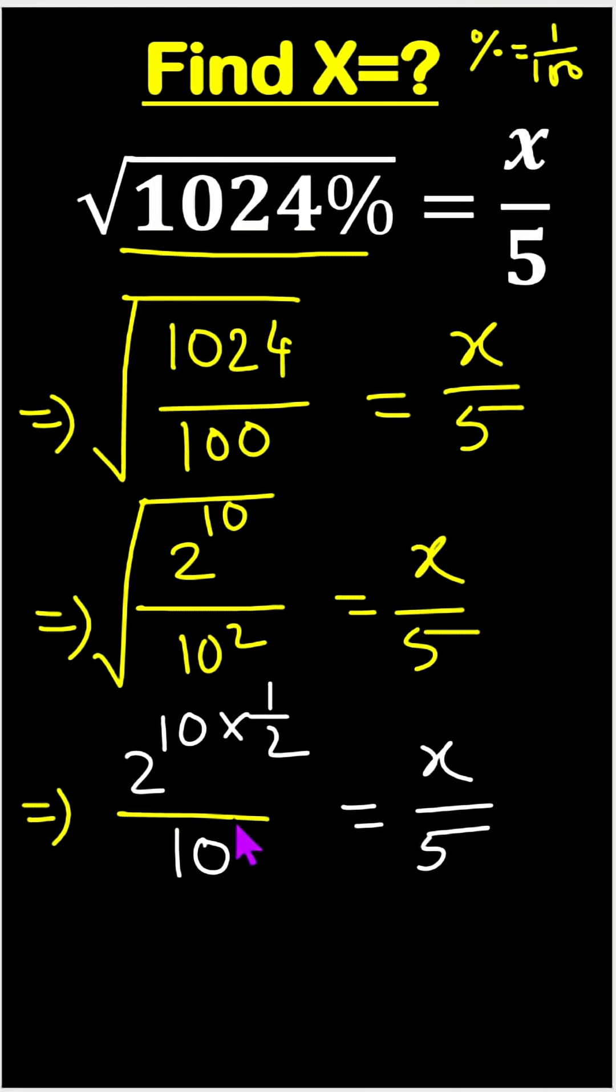So here 10 divide 2 is 5. We can write 2 to the power 5, it means 32, and here cross multiplication times 5 equals to 10x.